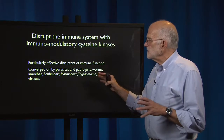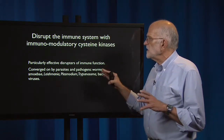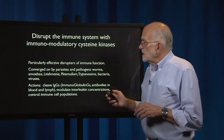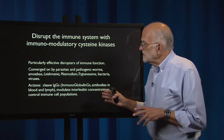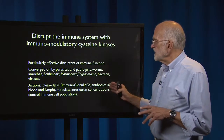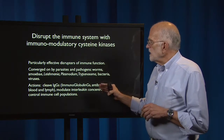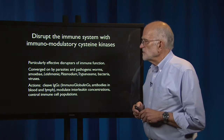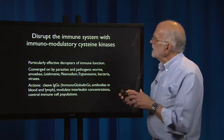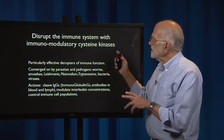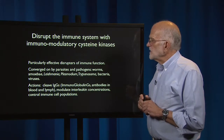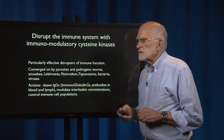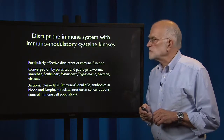This method of using cysteine kinases has been converged upon by many parasites and pathogens: worms, amoebae, Leishmania, Plasmodium, Trypanosoma, bacteria, and viruses all do this. The action is to cleave immunoglobulin Gs (antibodies in blood and lymph), to modulate interleukin concentrations, and to control immune cell populations. This particular kinase is a very effective way of disrupting at least three aspects of immune function.